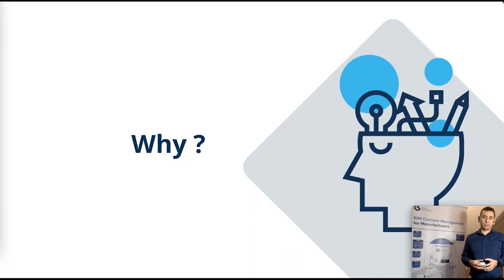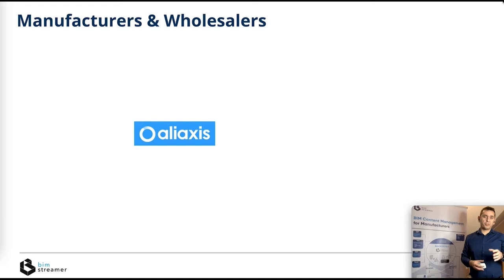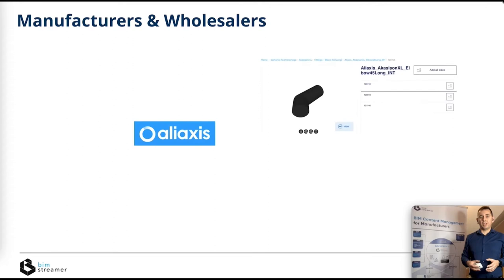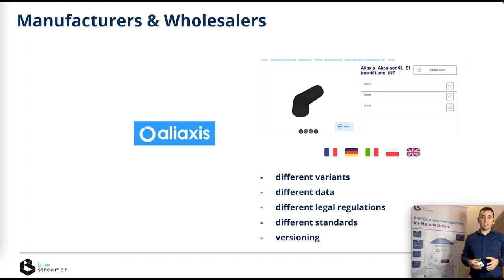So why do these companies need to manage BIM content? Take the manufacturer example — let's refer to the AliAxis case. AliAxis needs to outreach designers with their BIM libraries. AliAxis is an international manufacturer, and as a result, they need to adapt BIM content to specific regions, addressing different product variants, different sets of attributes, different languages, legal regulations, and local standards and classifications.